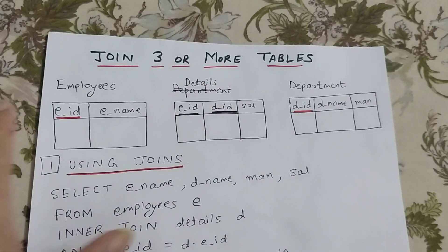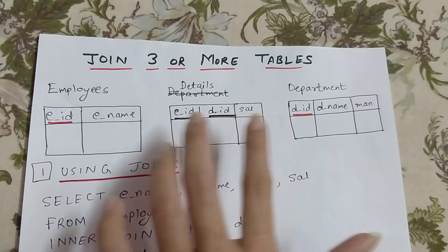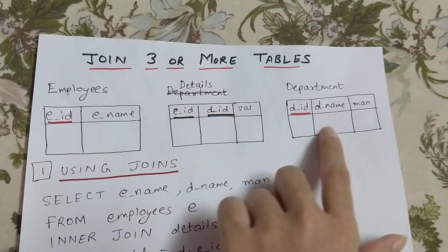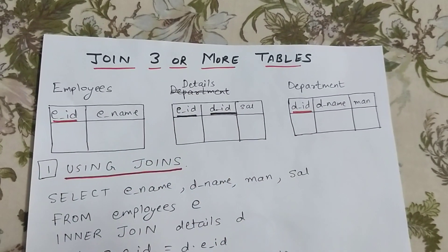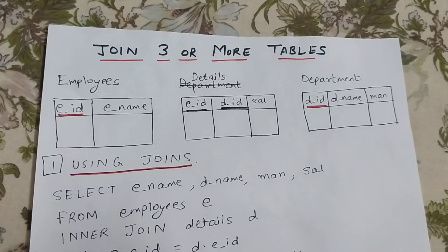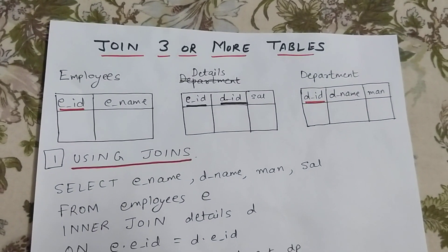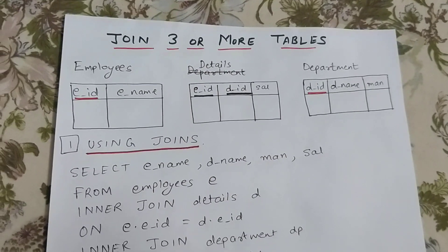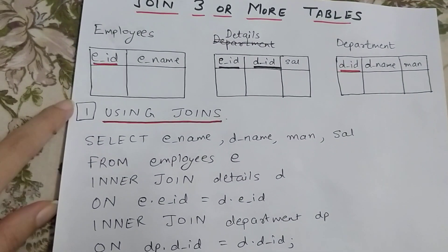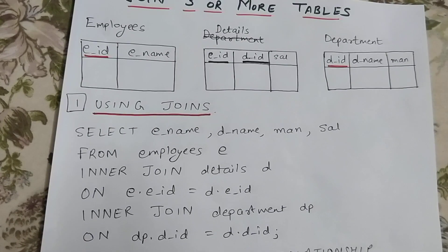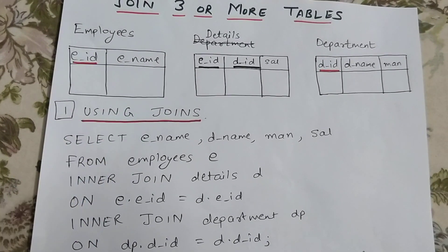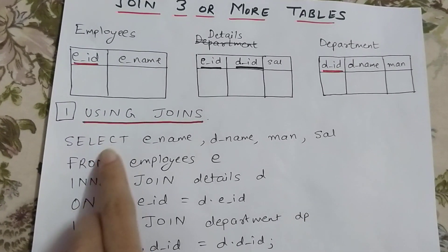So these are the three tables, and we are going to see two ways how we can join attributes like E_name, salary, and manager all together in one query. Let's see the first way, which is by using joins. We will simply select whatever we want to print.